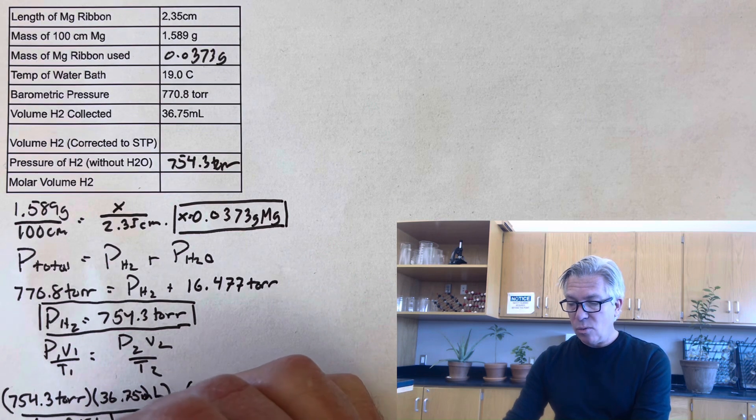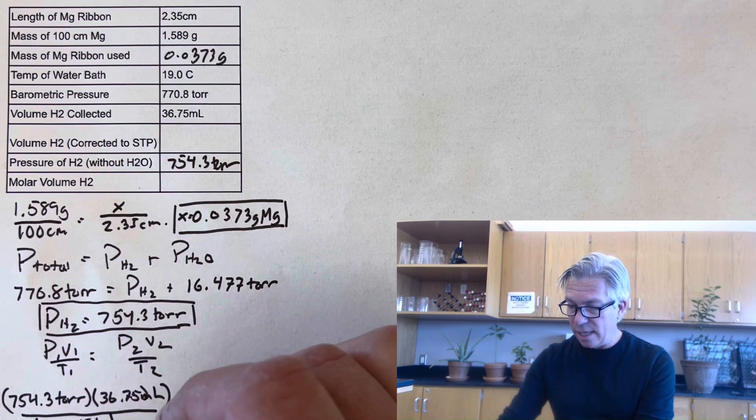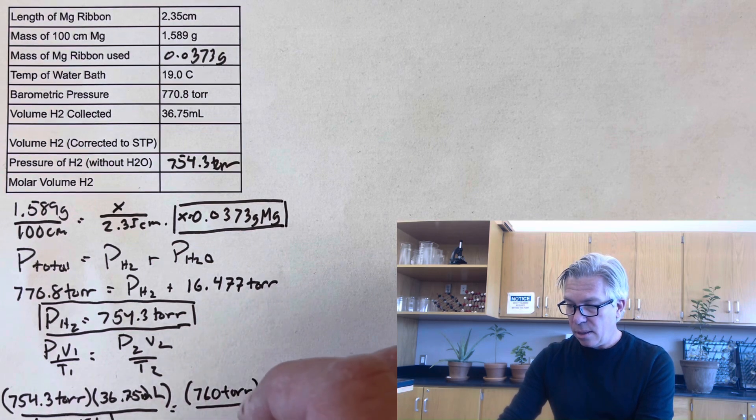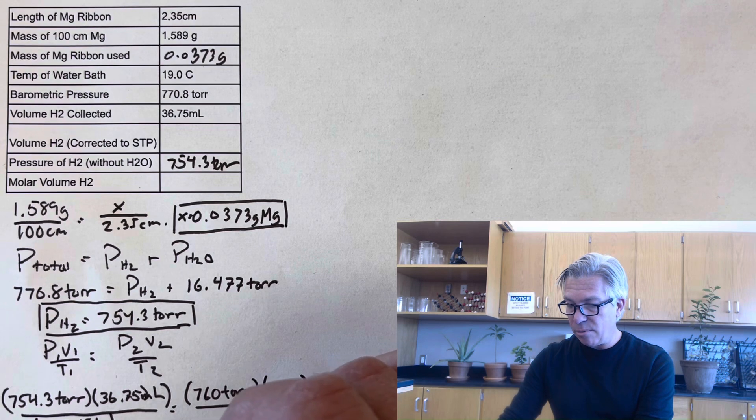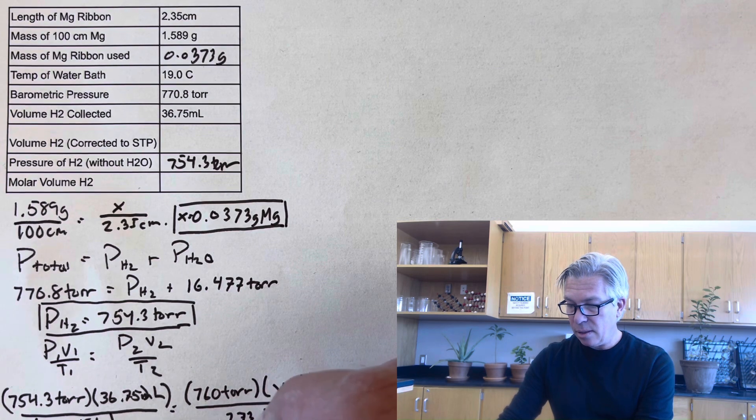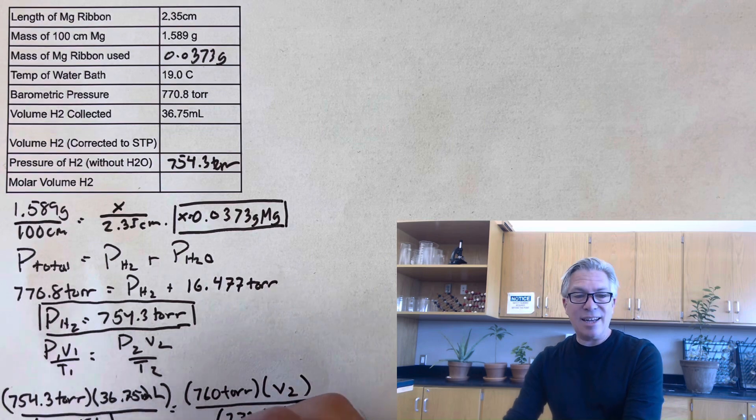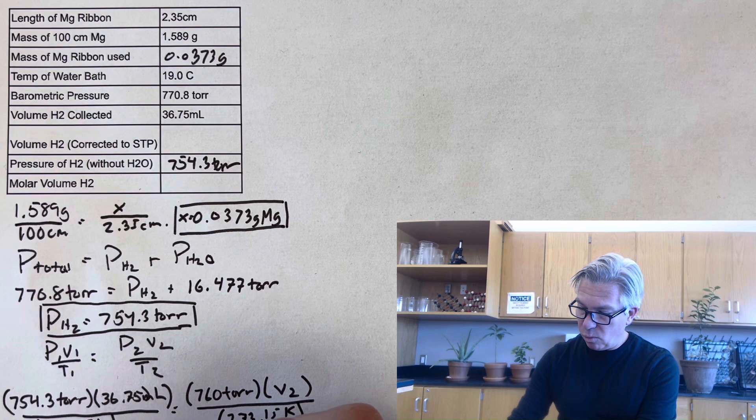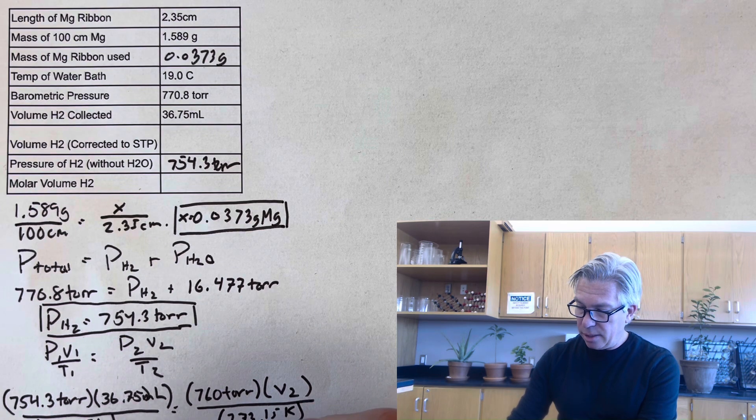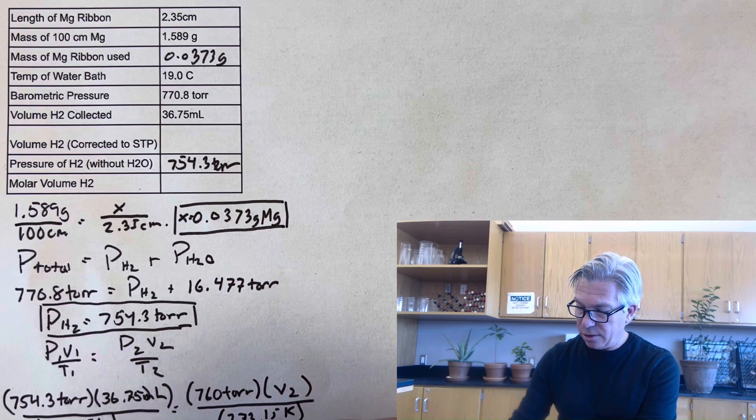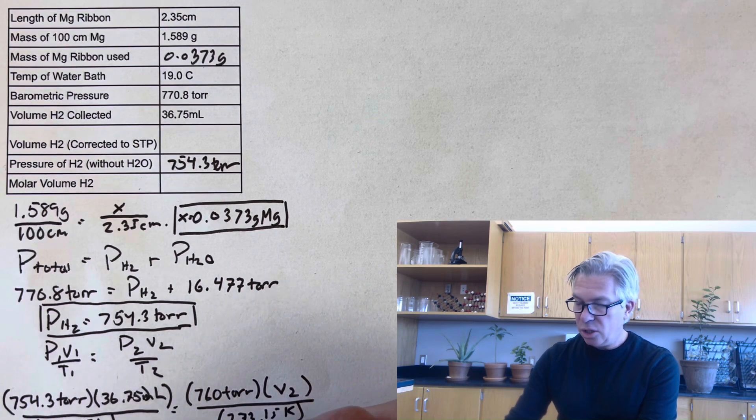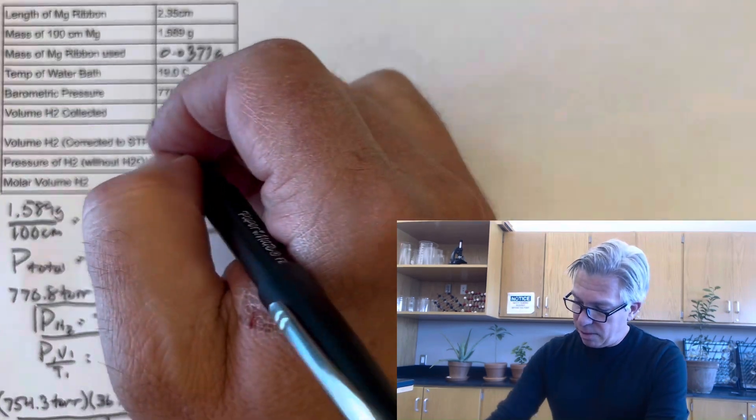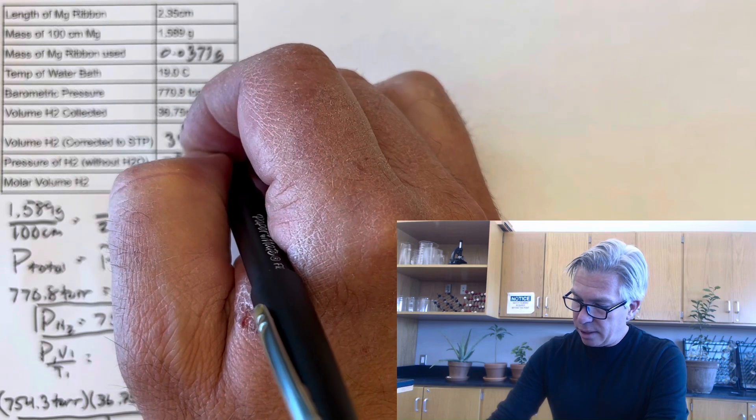Now, let's say this gas were to be adjusted to standard pressure, which is 760 torr, and standard temperature, which is 273.15 Kelvin. What would the new volume be at STP? So we do the math turns out to be 34.10 milliliters as opposed to 36.75 milliliters. So the volume would shrink a little bit as it went toward standard temperature and pressure. So correct it to STP. Let's do 34.10 milliliters.